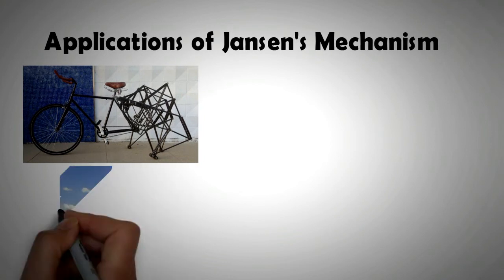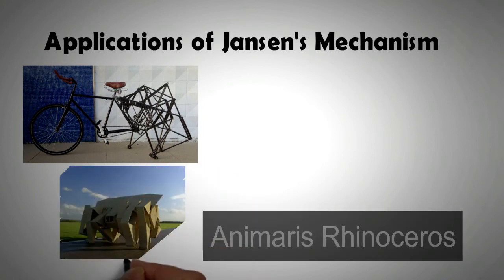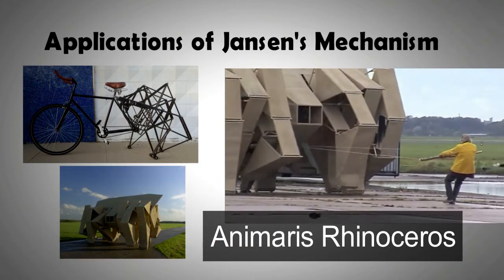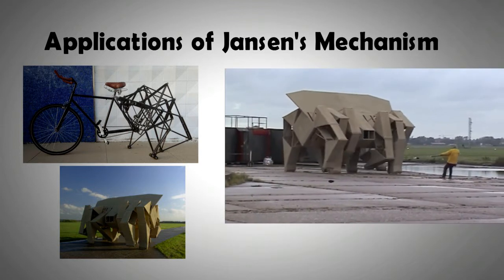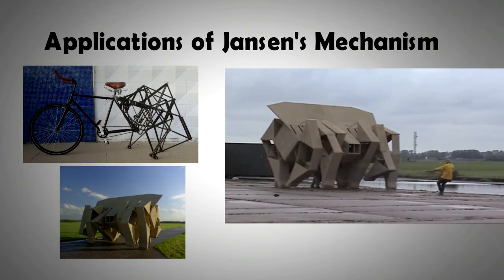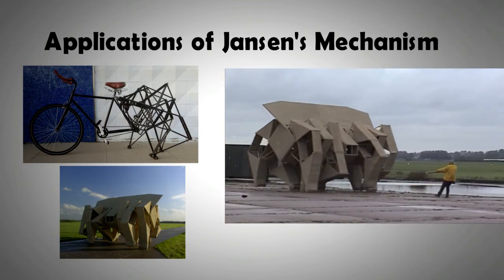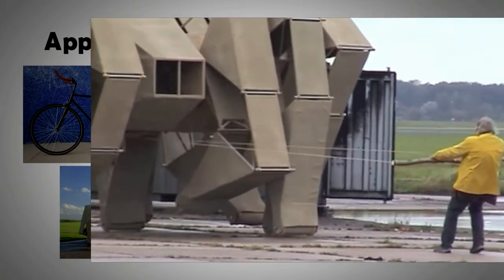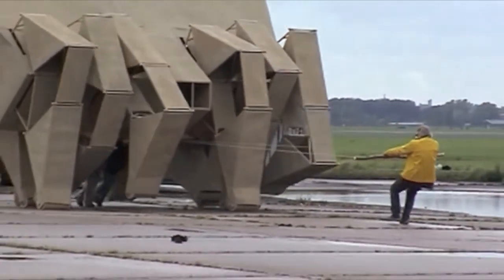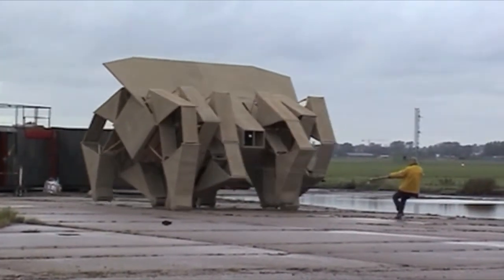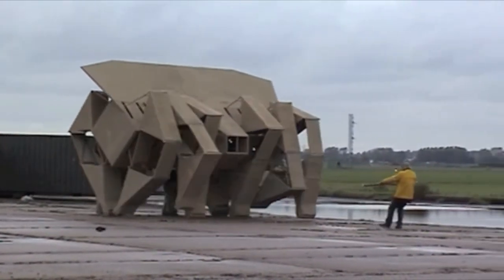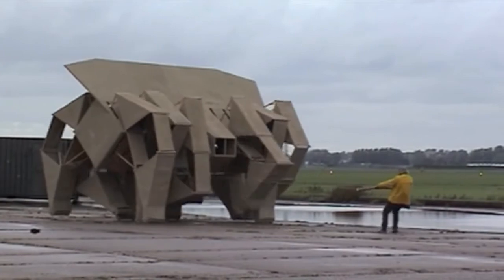It was Theo Jansen himself who designed the Animaris Rhinoceros specifically to transport load. Unlike most of his creatures that were made of flexible plastic tube, Animaris Rhinoceros had a sturdy skeleton made of steel and had a polyester skin. Even though the mechanical creature weighs two tons, it can be easily tucked by a single person.